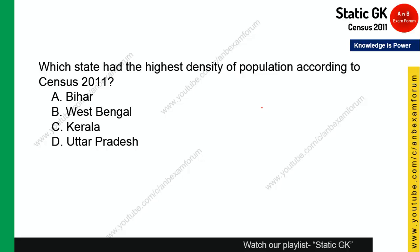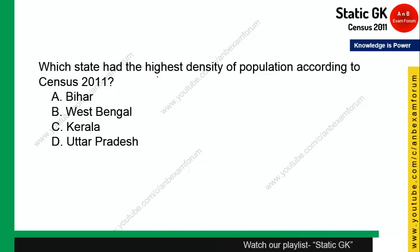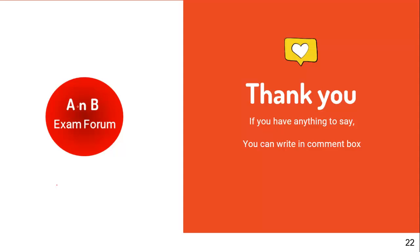Question 17: Which state had the highest density of population according to Census 2011? Earlier in Census 2001 it was West Bengal, but in Census 2011, Bihar has the highest density. That concludes almost 20 MCQs and the important pointers related to Census 2011. If you have any questions, write in the comment box. Thank you for watching — have a nice day!